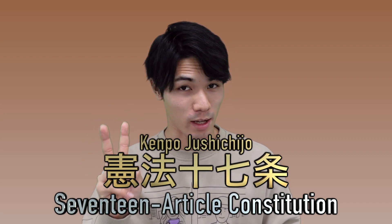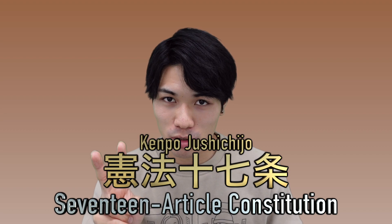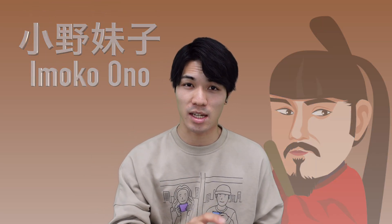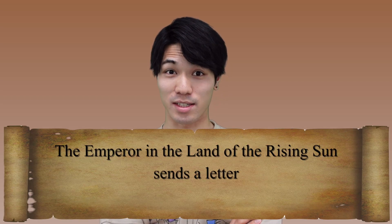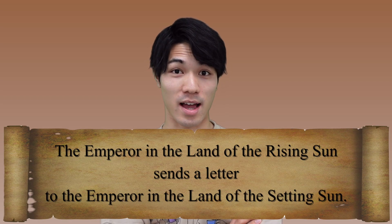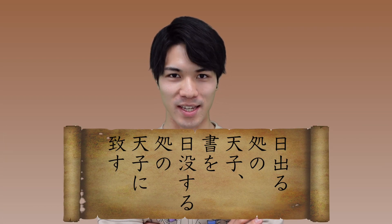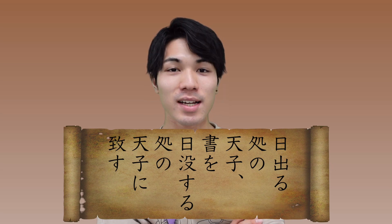Kan Ichuu Nikai — the 12 court ranks — and Kenpo Jui Chijijou — the 17-article Constitution — are very important terms, so make sure to remember them. Speaking of his foreign policy, in 607 Prince Umayado sent Ono no Imoko as an envoy to the Sui dynasty and sent a diplomatic message to the Sui Emperor, with the wording: 'The Emperor in the land of the rising sun sends a letter to the Emperor in the land of the setting sun.'